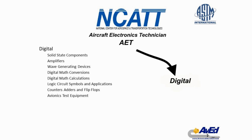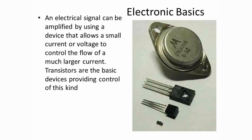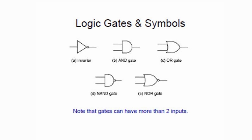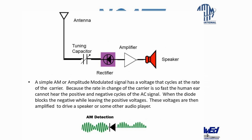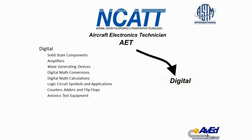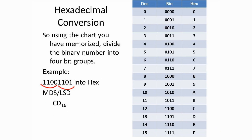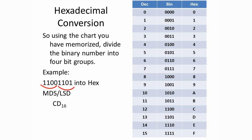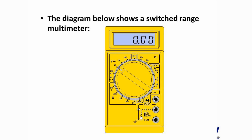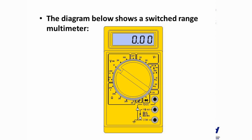The final section of the NCAT AET test covers subjects outside of A and P but familiar to anyone trained in digital electronic theory. This section covers the construction of diodes and transistors and the functions of those devices in oscillators and amplifiers. Basic digital logic is included, covering logic gates and how components are combined to create circuits such as flip-flops, counters, and adders. The digital section also reviews number systems used in digital logic, including binary, octal, and hexadecimal. The last part covers basic test equipment used by all avionics technicians, including multimeters and oscilloscopes.